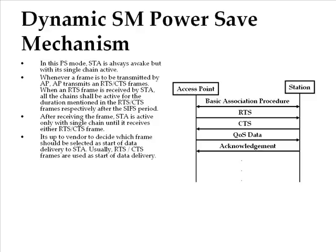The SM power save mode allows an 802.11n client to power down all except one of its radios. The power save mode has two sub-modes: static and dynamic. The dynamic SM power save mode also turns off all except one of the client's radios, but in this mode the client can rapidly enable its additional radios when it receives a frame addressed to it. The client can immediately return to low power state by disabling its additional radios right after frame reception is complete.